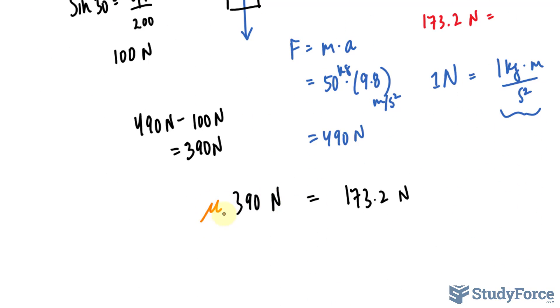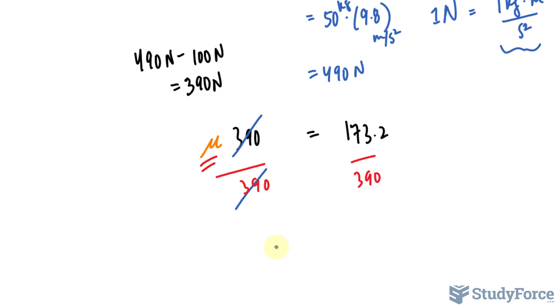So mu times 390 should equal the horizontal component, which we found. Now, I'm just going to ignore this n, so that we don't run into any confusion. And we want to solve for mu. By dividing both sides by 390, the 390s cancel out, and we're left with the coefficient of friction.